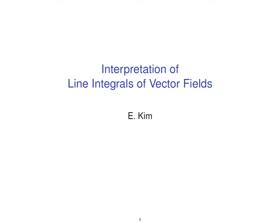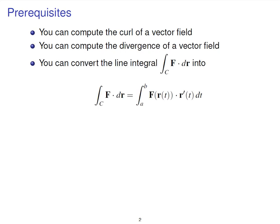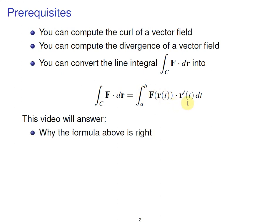We're going to go through interpretation of line integrals of vector fields. There are several kinds of line integrals we're going to look at. I'm going to assume that you know how to compute the curl and divergence of a vector field, and that you have seen line integrals of this sort, and that an integral like this you turn into a standard Calc 1 style integral. You may have been told that this kind of integral converts into this, or you might use the fundamental theorem of line integrals if that applies, but really the reason why might be a little unclear, so in this video we're going to try to explain why this formula is right.